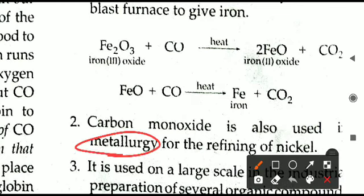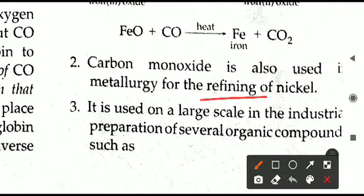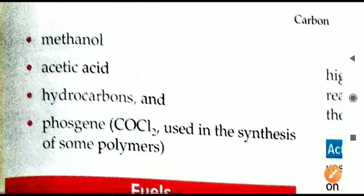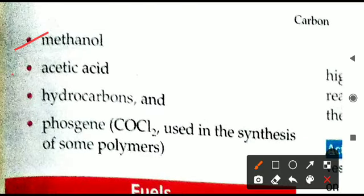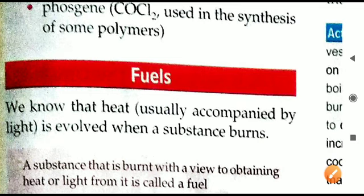The second use is in metallurgy for refining of nickel — to obtain pure nickel metal. The third use is in the large-scale industrial preparation of several organic compounds, such as methanol, acetic acid, different hydrocarbons, and phosgene (COCl₂). All these chemicals are manufactured in industry using carbon monoxide gas. That completes the topic of carbon monoxide; now we move to fuels.